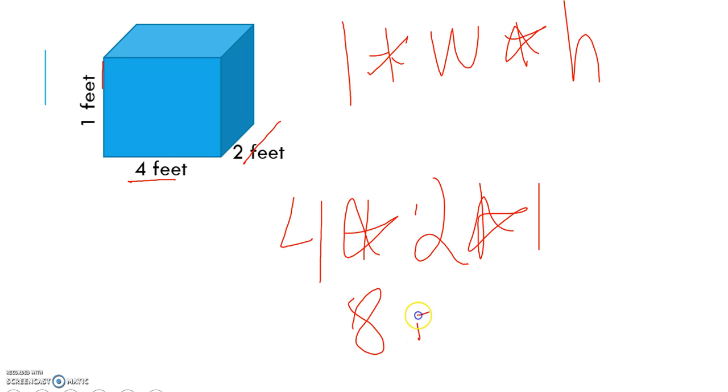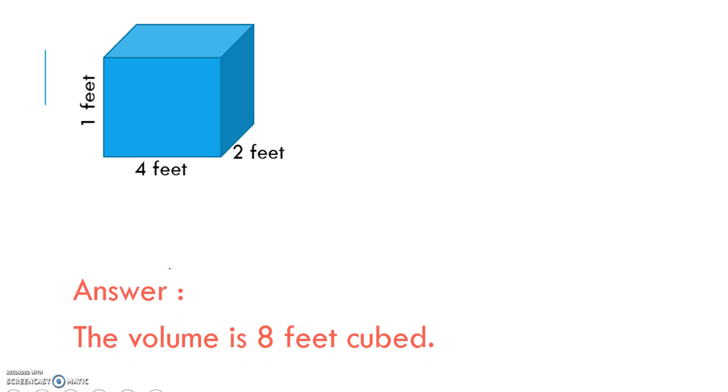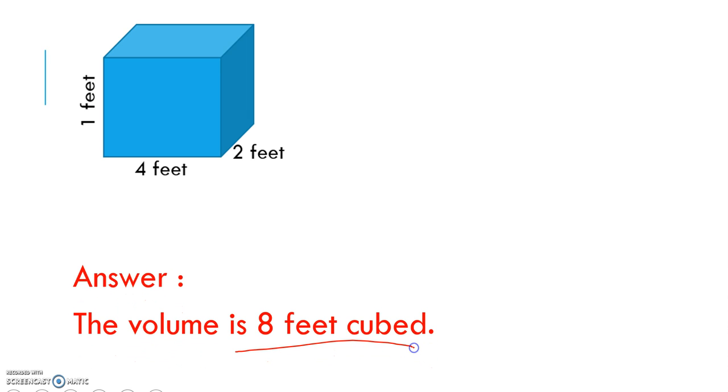4 times 2 is 8 and now we're left with 8 times 1 which is 8. And then we want to add our unit which would be 8 feet cubed. Let's check. The volume is 8 feet cubed and we have the right equation.